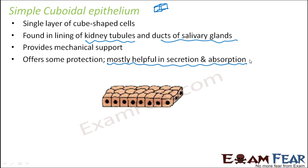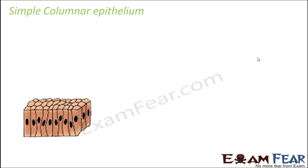Simple cuboidal epithelium offers some protection, but when compared to simple squamous, it provides a little better protection. Simple squamous cells were very thin, so they provided very little protection, while cuboidal cells are thicker and offer somewhat more protection.